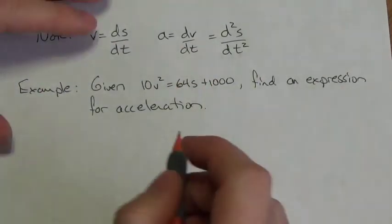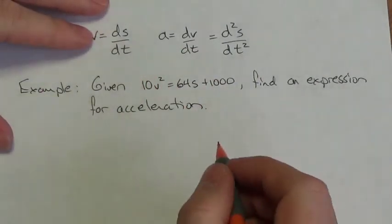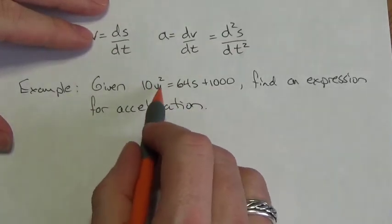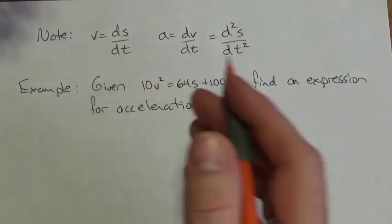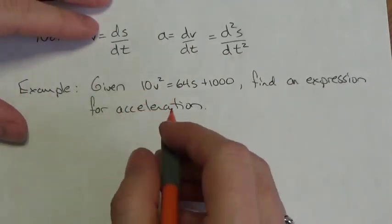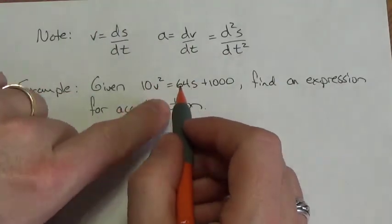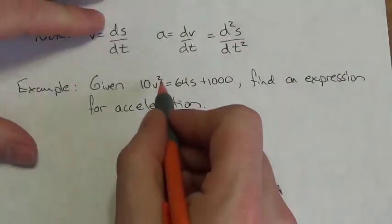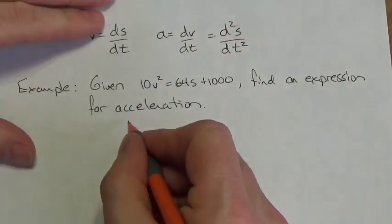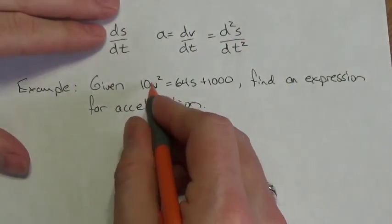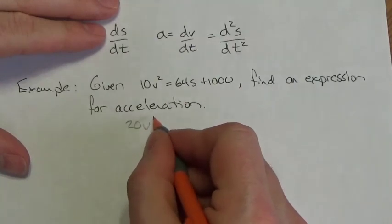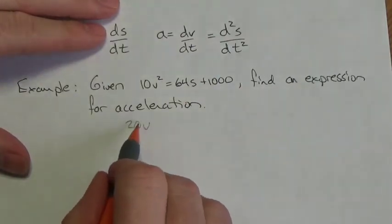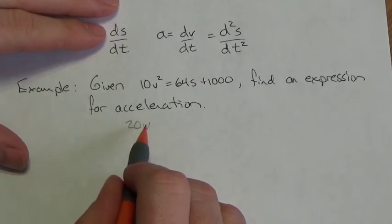To take the derivative of the left-hand side, 10v², I recognize that v is a function of time. So when I take the derivative, I bring down the 2, giving me 20, times v to the power of 1. Then I move in and take the derivative of the velocity function.